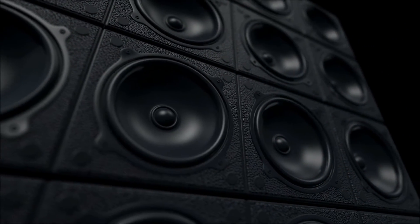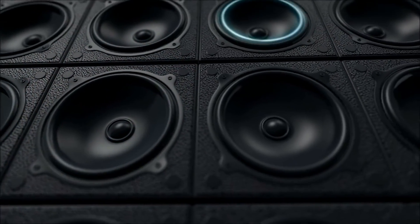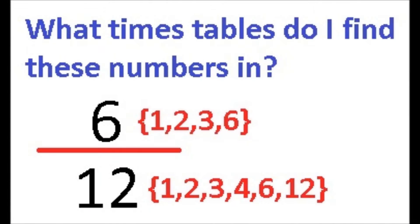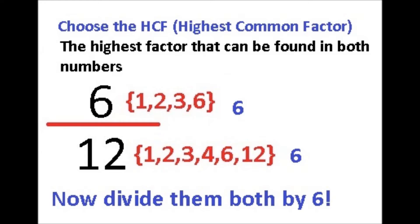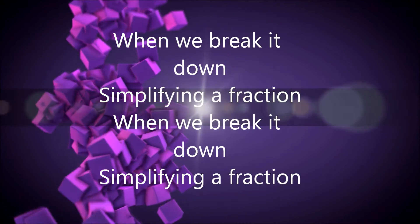Simplifying a fraction — when we break it down. Think of all the factors of the numerator at the top, and denominator. Look at all the listed factors; you've got to find the HCF of both the numbers, divide them both, and you'll see you've got the answer. When we break it down.